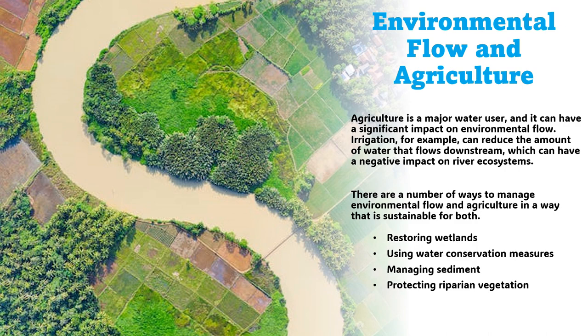Managing sediment can benefit both agriculture and environment. For example, sediment can be used to fertilize crops and can also help to stabilize river banks. Protecting riparian vegetation can stabilize river banks, filter water, and help to mitigate the negative impacts of agriculture on environmental flow. By taking these steps, we can help to manage environmental flow and agriculture in a way that is sustainable for both, ensuring we can enjoy the benefits of both agriculture and healthy river ecosystems for future generations.